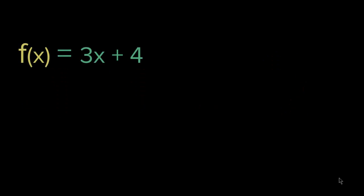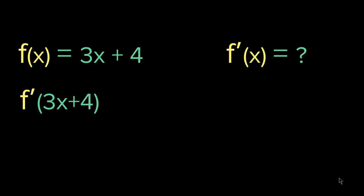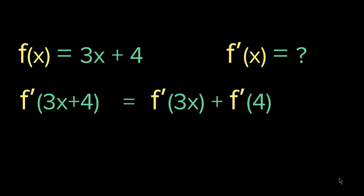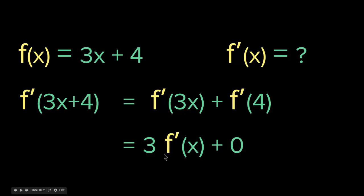Let me give you a couple of examples. Let's say we have f(x) = 3x + 4. The derivative of f(x) = 3x + 4 is the derivative of 3x plus the derivative of 4. We know that the derivative of 3x is 3 times the derivative of x, so we have 3 times the derivative of x plus 0. The derivative of 4, a constant, is 0. So it is 3 times f'(x), and since f'(x) = 1, we get 1 times 3 = 3.